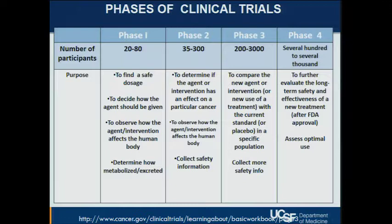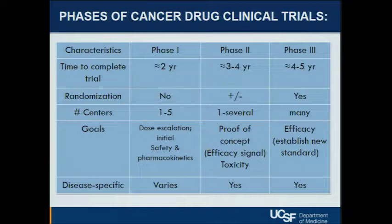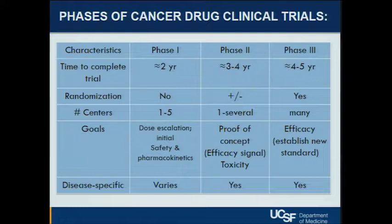Phase 3 trials are really powered to show statistically significant improvements relative to the standard of care. In terms of timeline, smaller studies might take one to two years to complete, with larger studies sometimes taking four to five years, depending partly on how fast enrollment happens. Phase 1 studies are often done at just one or two centers — sometimes only at a single institution. Whereas a Phase 3 study might be done at hundreds of institutions in the United States, or globally. The goals of the study vary, and they're highly regulated at every step along the way.